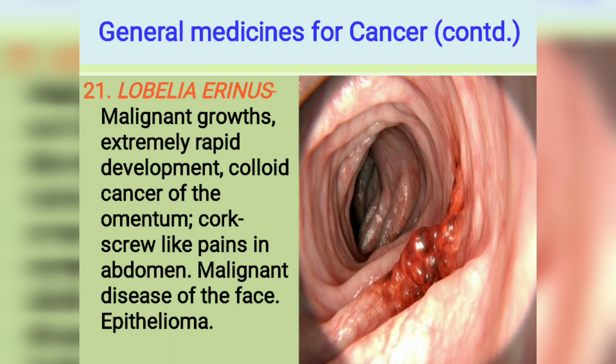The last medicine in general medicines is Lobelia. Lobelia covers malignant growths with extremely rapid development, colloid cancer of the omentum, coccyx-like pains in the abdomen, malignant disease of the face, and epithelioma. All malignant growths that develop very rapidly are covered by Lobelia; it checks that rapid development. All abdominal malignancies including omentum cancer with abdominal pain are also indicated.